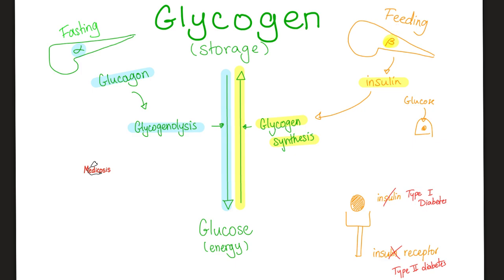In the feeding state, blood sugar rises until the beta cell of the pancreas secretes insulin to save the day. Insulin will stimulate glycogen synthesis. After insulin takes glucose by the hand and tells it to enter the cell, that glucose can be burned to make energy — this is called glycolysis — or stored for a rainy day in the form of glycogen, which is called glycogen synthesis. Insulin will boost both processes.